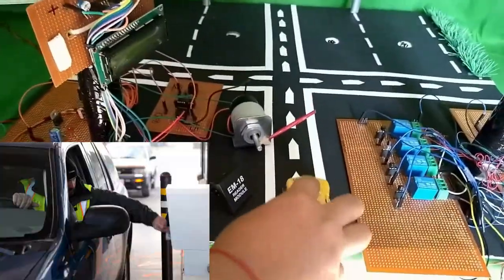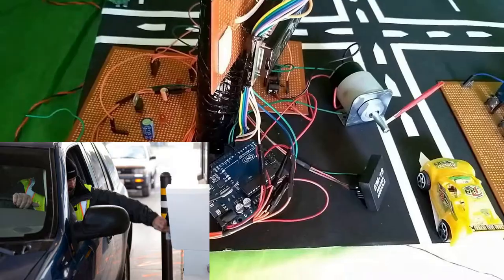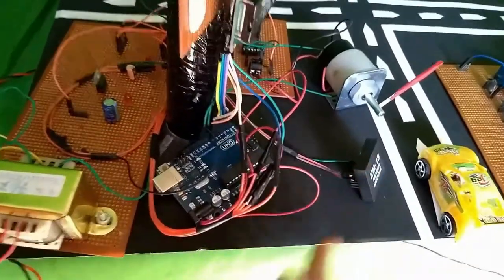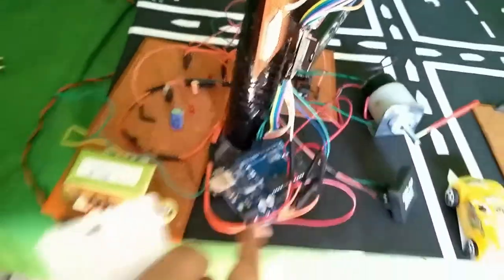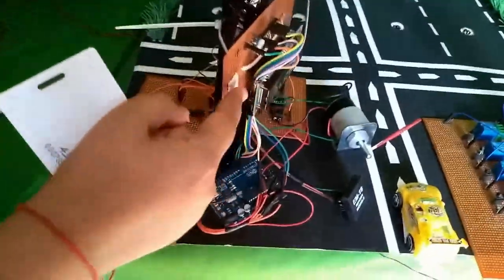Now, when the car reaches the gate, the car driver has to show his RFID card to the EM18 module. Then this EM18 will send the signal to the RD node. Then RD node will send the signal to the LCD screen.